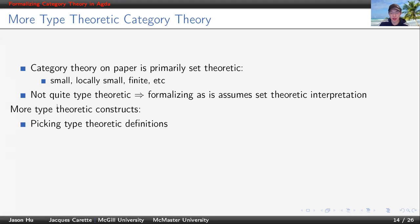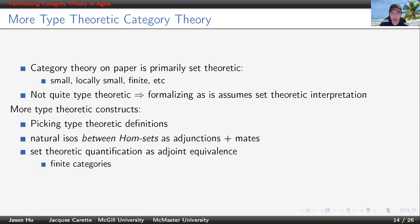Therefore, we look for ways to express concepts more type-theoretically. First, we want to pick some type-theoretic definitions. Sometimes we speak of natural isomorphisms between hom-sets. Since it's between hom-sets, this is clearly too set-theoretic. Even in the textbook, it requires locally small assumption. We found a way to convert this kind of natural isomorphisms into adjunctions and mates. There are cases where we apply some set-theoretic quantification on the category. For example, we might sometimes talk about finite categories. We use adjoint equivalents to replace this quantification.